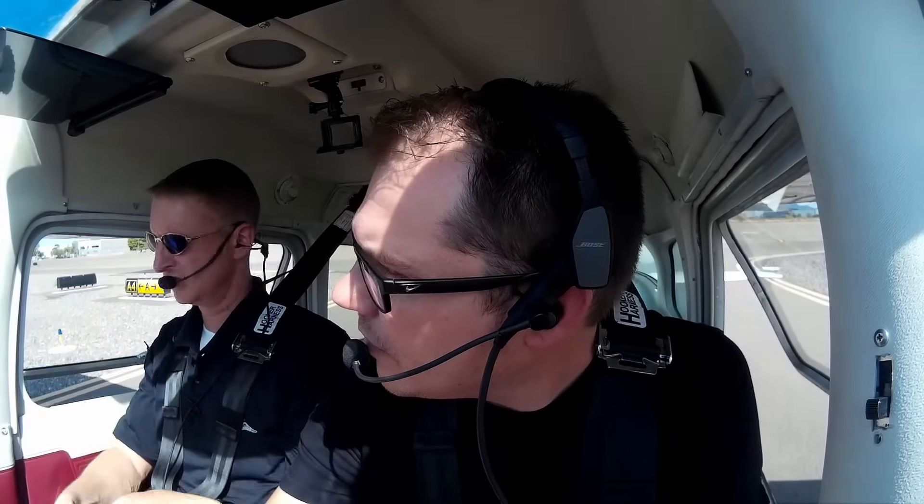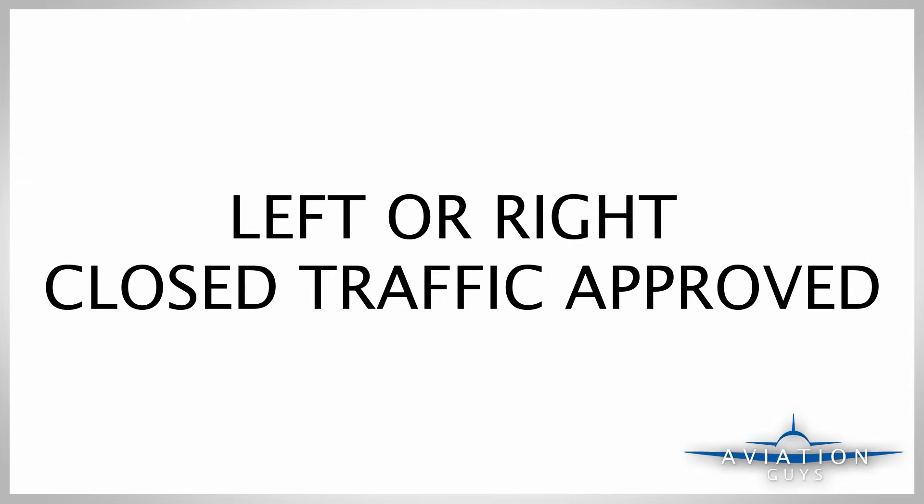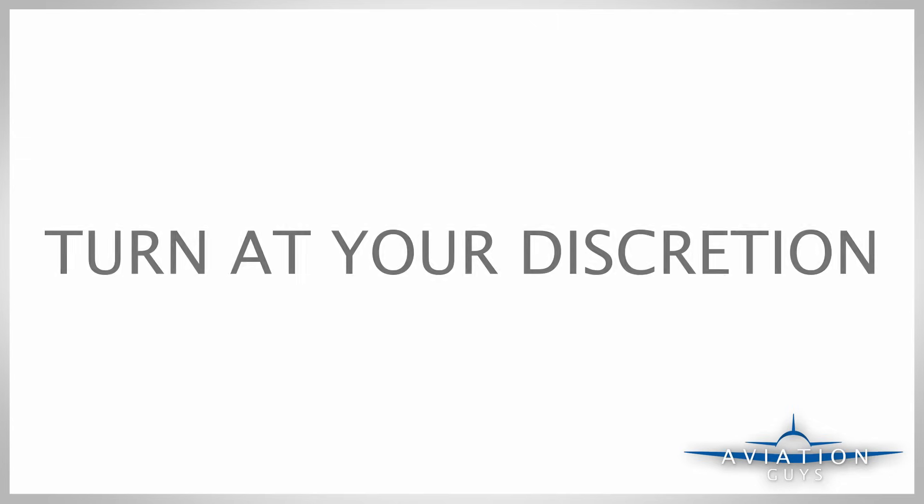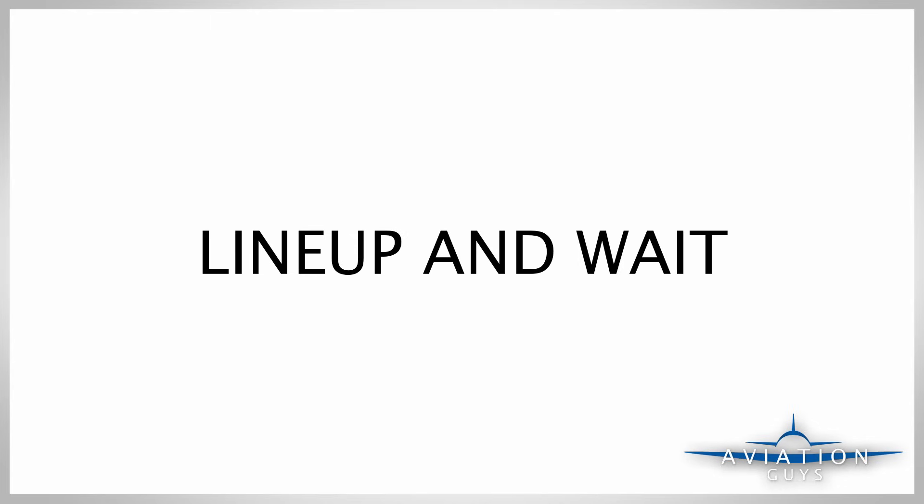No matter what instructions you're given, you just need to confirm and comply. Here are some common instructions you might hear. 'Hold short of runway' — you'll hear this if an aircraft is about to land or the runway isn't clear. 'Fly straight out or fly runway heading' — if departing and they want you at a required altitude. 'I'll call your crosswind' — tower is maintaining separation and will let you know when to turn. 'Left or right closed traffic approved' — you're cleared to stay in the traffic pattern for touch and goes. 'Turn at your discretion,' 'Line up and wait,' and 'Cleared for takeoff.'